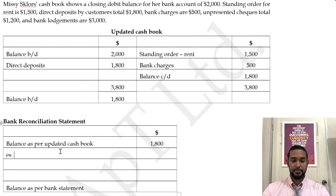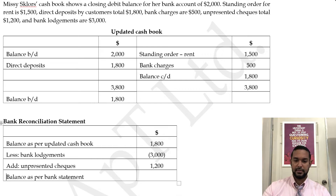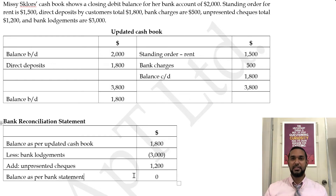In the bank rec, we start with the updated cash book balance of $1,800. We have un-presented checks totalling $1,200 and bank lodgements totalling $3,000. We add un-presented checks and minus bank lodgements. Less bank lodgements $3,000, plus un-presented checks $1,200. $1,800 plus $1,200 minus $3,000 equals $0 — so you actually have no money in your bank account. It's a flat zero.